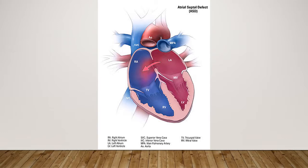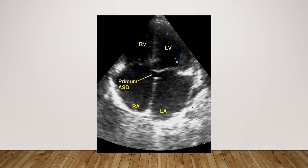Here's a view with all the different vessels showing a large secundum ASD with flow going across. The right atrium and right ventricle show some enlargement. In a newborn, there won't be much enlargement yet, but with time the chambers grow. This will probably need to be closed, but we'll watch the child to see if tissue closes it first, unless it's incredibly large and causing heart failure.